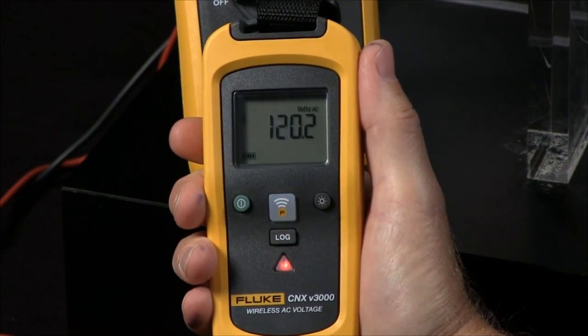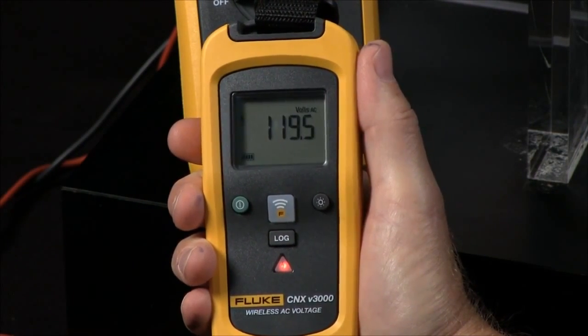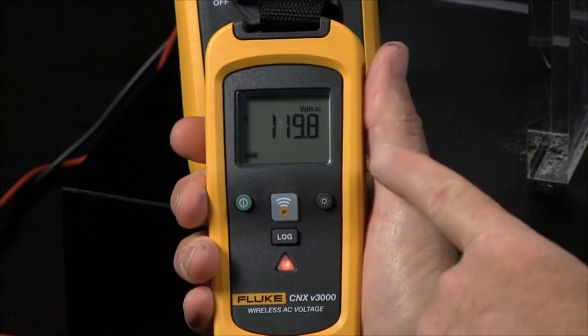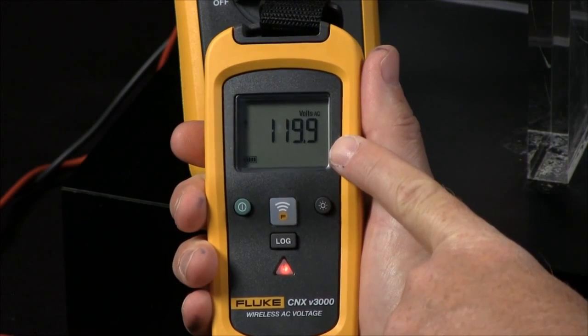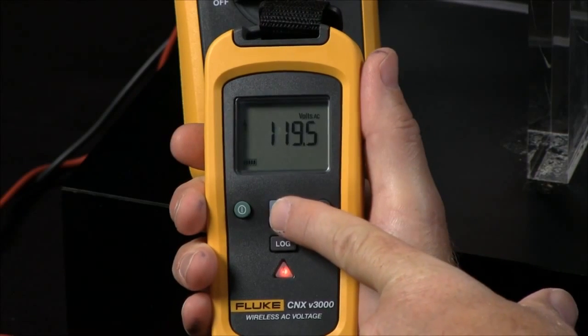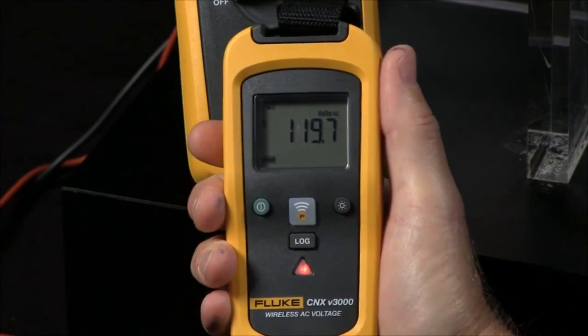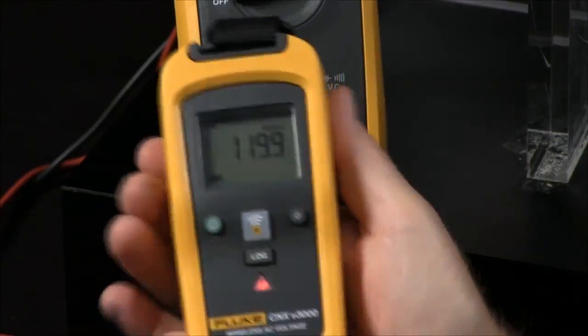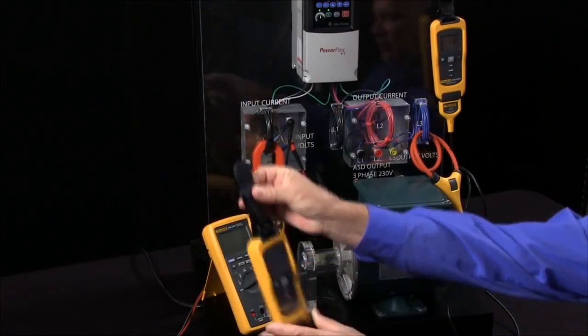Connect them to the circuit. A nice feature of these modules is they can be used as a standalone meter. We can actually read the value, and then we press the wireless button so they start to broadcast wirelessly. They even work with our magnetic straps so you can hang them.